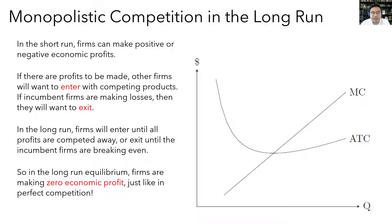Now let's talk about monopolistic competition in the long run. In the short run, as with any market, firms can be making either positive or negative profits. But if there are positive profits to be made, then other firms are going to want to enter the market. But if firms are currently making losses, then some incumbent firms are going to want to exit. So in the long run, firms are going to enter until all profits are competed away, or if they're currently making losses, some firms are going to exit until the remaining firms are breaking even. In the long-run equilibrium, when there's no more entry or exit, firms will be making zero economic profit, just like in perfect competition.